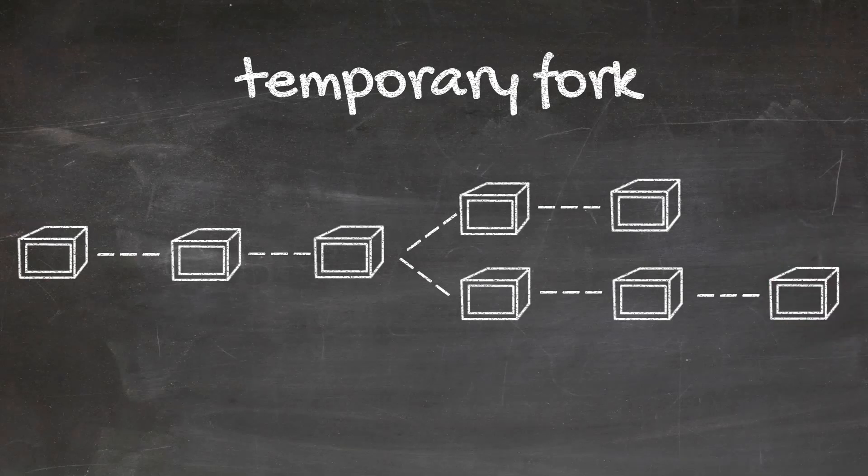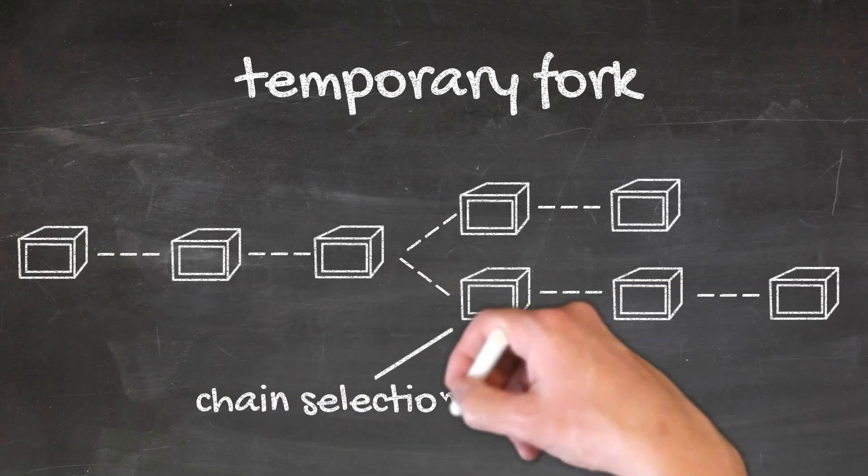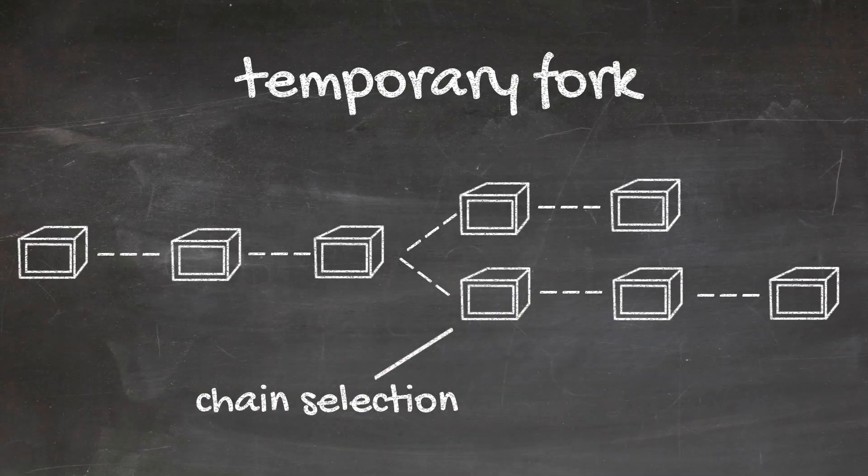In a proof-of-work system, those forks are simply resolved by a rule that selects the longest chain. Because the longest chain contains the most work, it was the most difficult to create, and thus has to be the right chain.